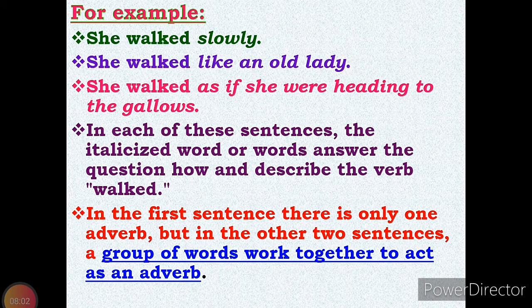Consider these three sentences: 'She walked slowly.' 'She walked like an old lady.' 'She walked as if she were heading to the gallows.' In each sentence, the italicized word or words answer the question 'how' and describe the verb. In the first sentence there is only one adverb, but in the other two sentences a group of words works together to act as an adverb.